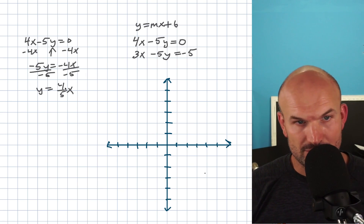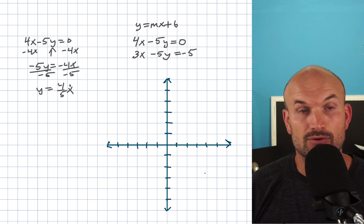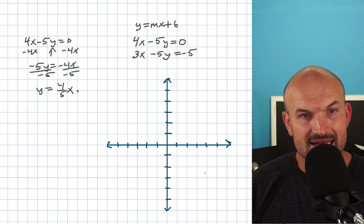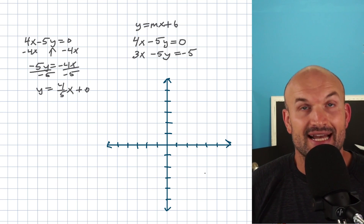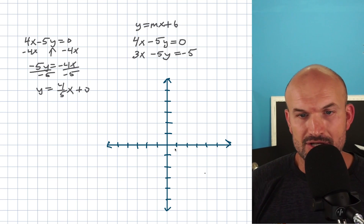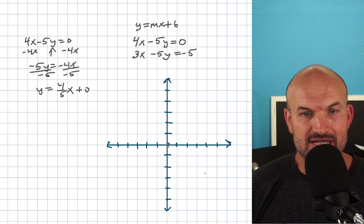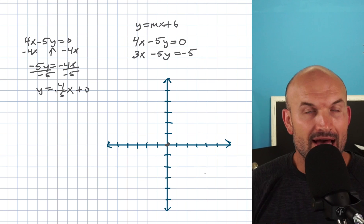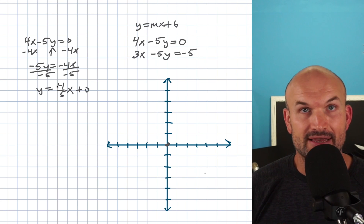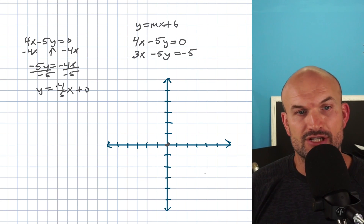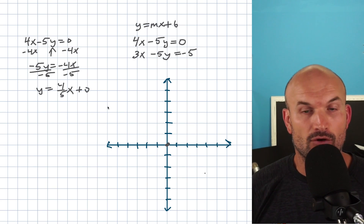This problem wasn't too bad. y equals 4/5 x. We don't have a b value, so you could write that in as 0. My y-intercept is going to be at 0, and the slope — the change in y over the change in x — is going to be 4/5.